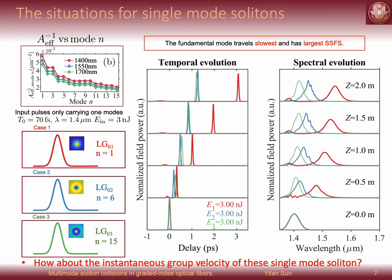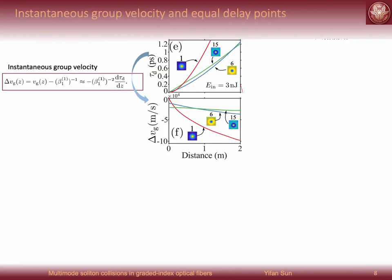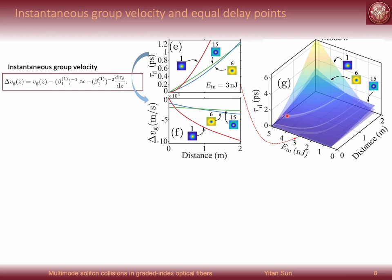But now the question is, can we find the evolution of the instantaneous group velocities during their propagation? For the former three cases, here I plot the group delay as a function of the propagation distance in the fiber. Then with this simple expression, we can easily obtain the instantaneous group velocity of soliton. So we notice that fundamental mode has the largest group velocity at the beginning of the fiber, but it's reduced so it eventually has the smallest group velocity. And this situation is similar to other high-order modes. And due to those different evolution of the group velocity, we see these three solitons have several equal delay points at different positions of the fiber. And here the input energy is 3 nanojoules. If we vary this input energy, we find these equal delay points between two modes exist at different positions in the fiber.